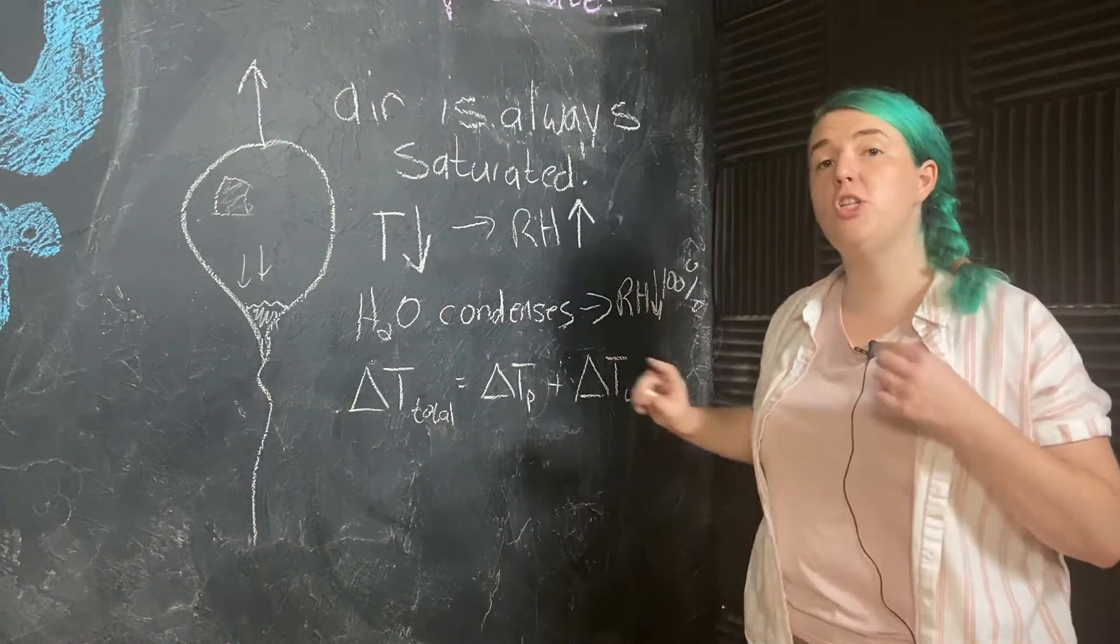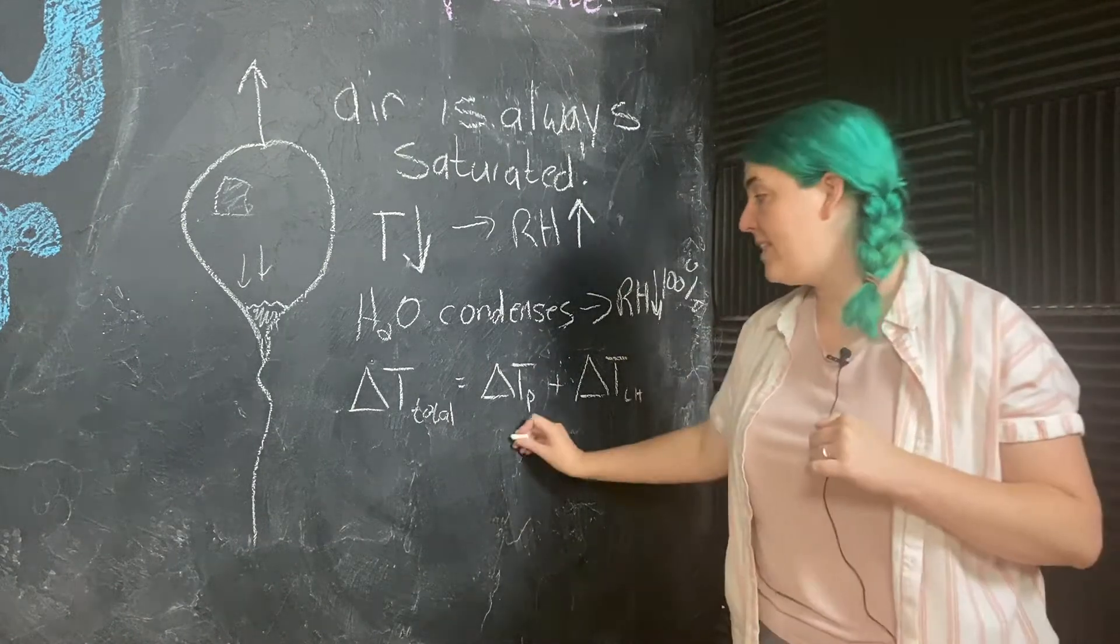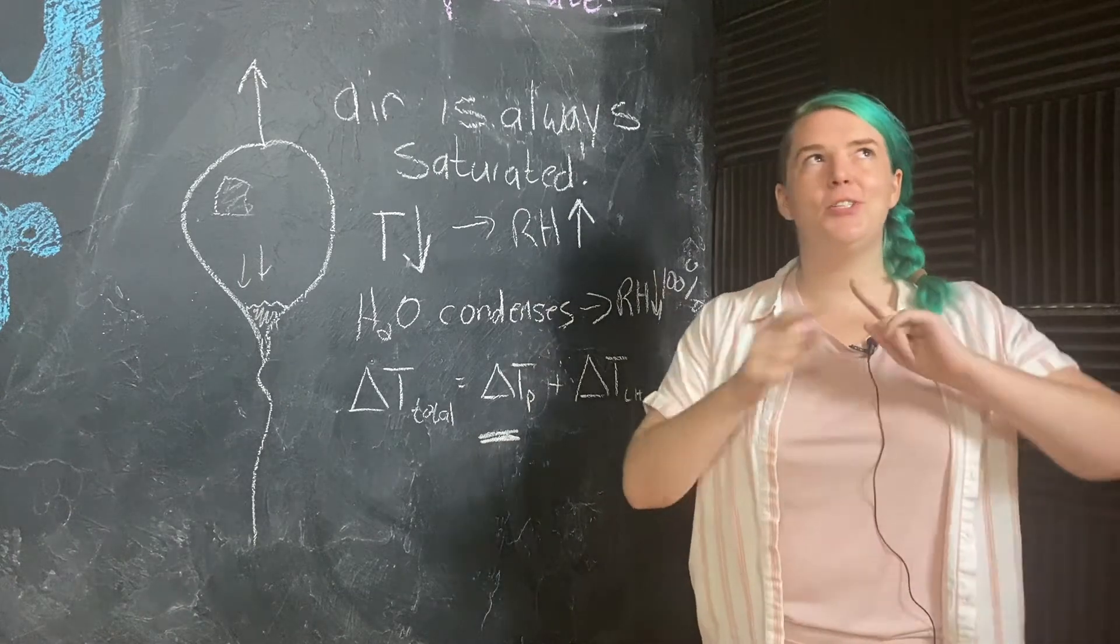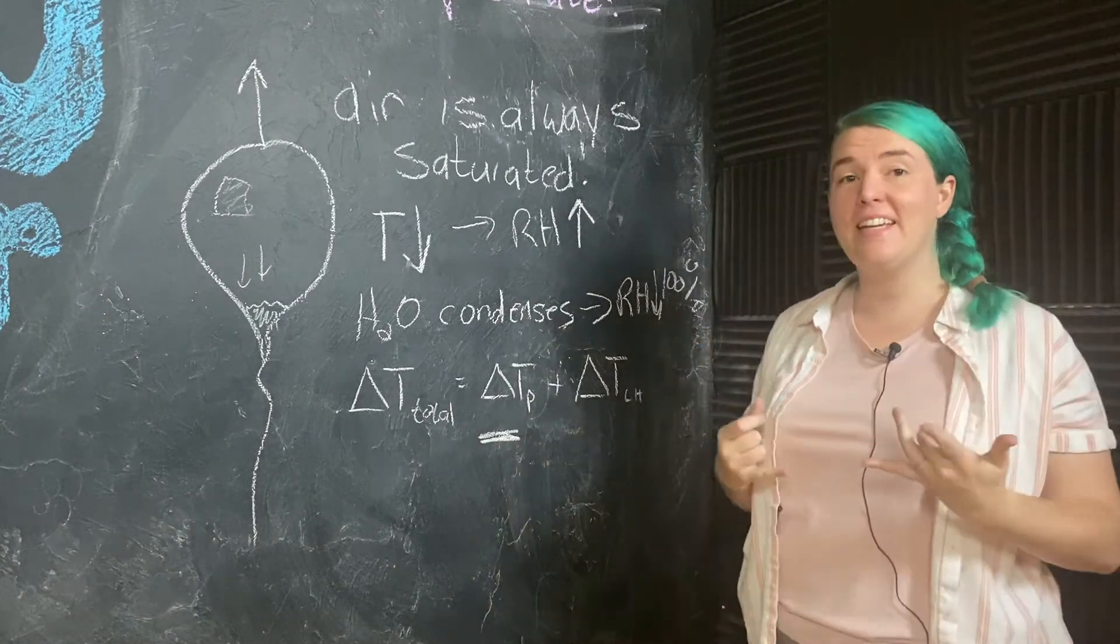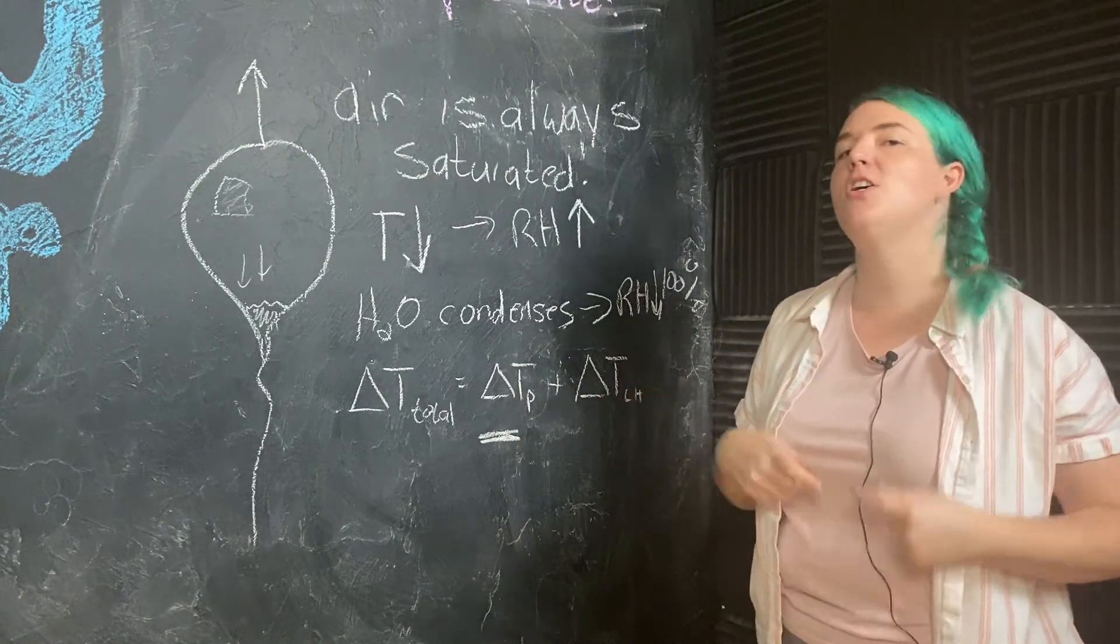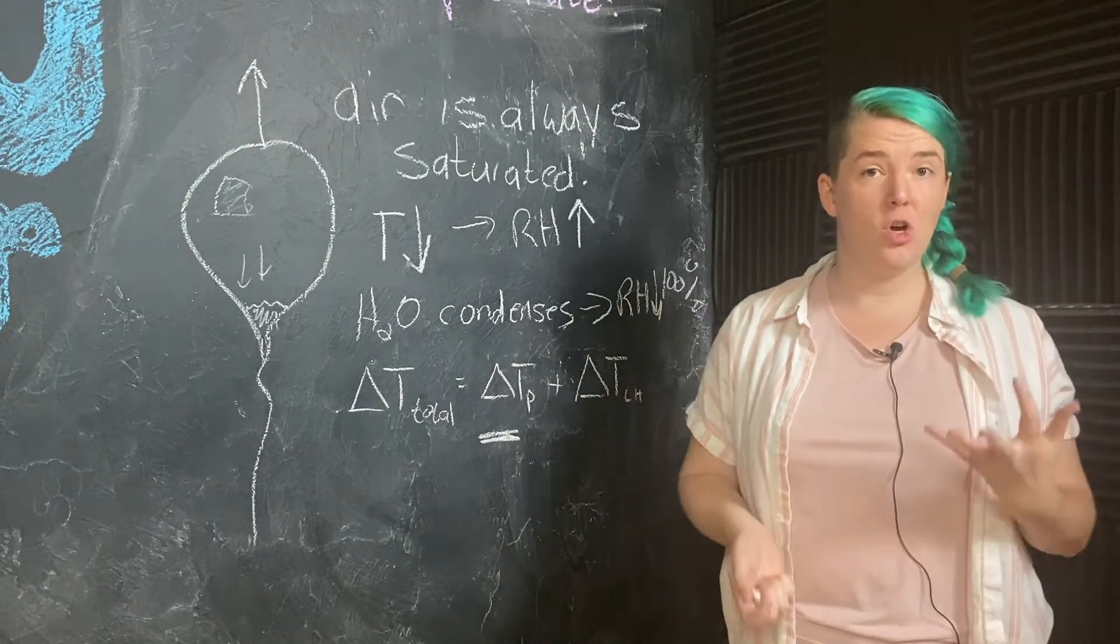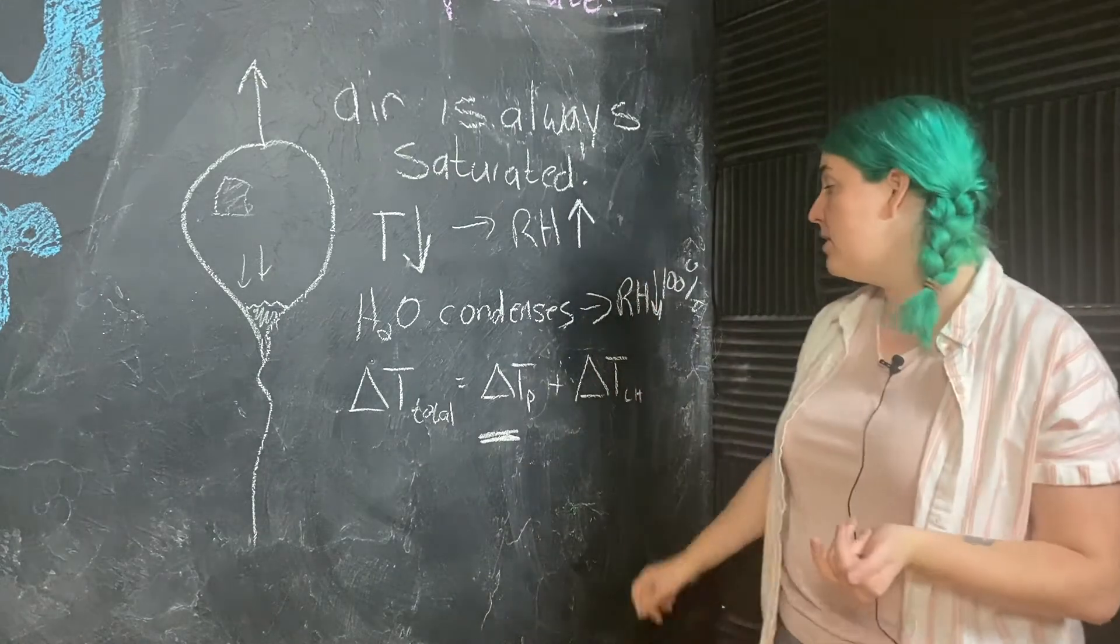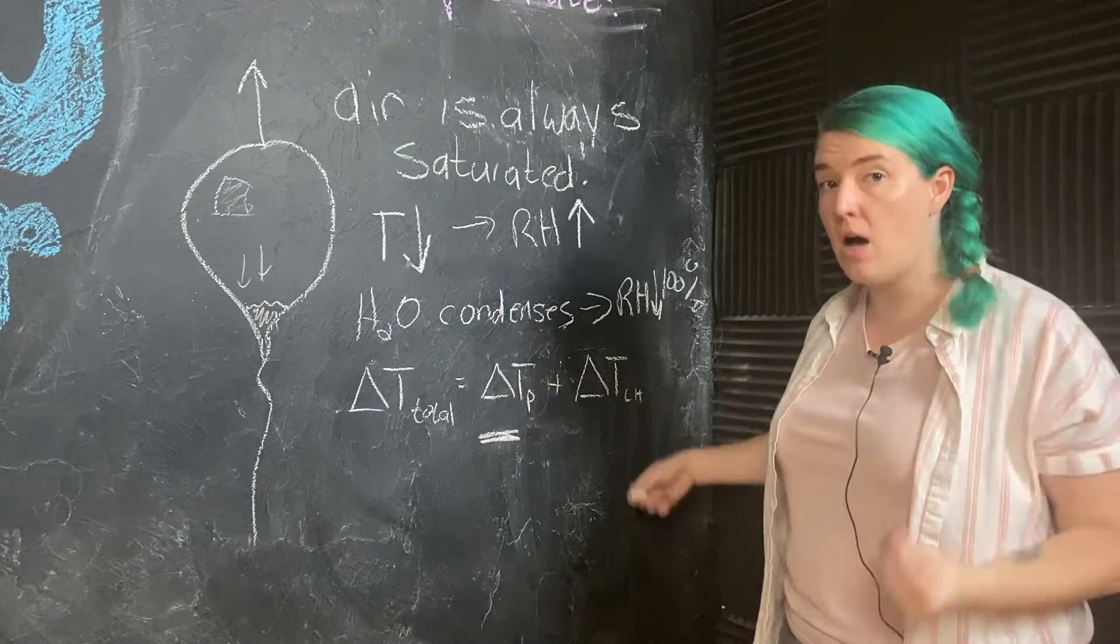We know that the change in temperature from the change in pressure, this is a negative change. But like we learned two videos ago with latent heating, when I'm going from a more energetic state to a less energetic state, when we have condensation going on, that's actually going to warm the environment. So this would be a positive change.